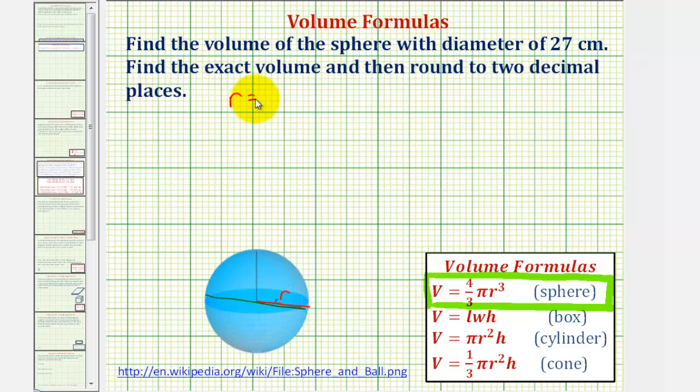The radius is going to be equal to half of the diameter, where again, the diameter is 27 centimeters. So we have 27 centimeters divided by two. Let's go ahead and leave this in fraction form, because notice how there's already a fraction in our formula. So we'll leave this as 27 halves centimeters.